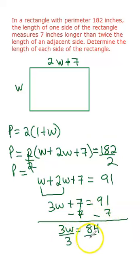And then I divide both sides by 3. So 84 divided by 3 is 28. So we know that w is 28.